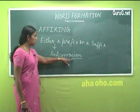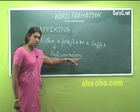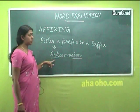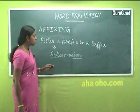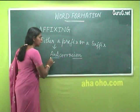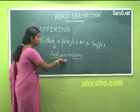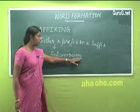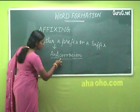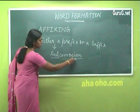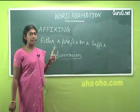Let us take an example — the root here is corrode. When I add a suffix I get corrosion or corrosive. When I add a prefix I get anti-corrosion or anti-corrosive material. So anti becomes the prefix because it is added at the beginning of the root; sion is the suffix added at the end. The nature of a prefix and suffix, when studied in detail, shows they are derivational and inflectional.